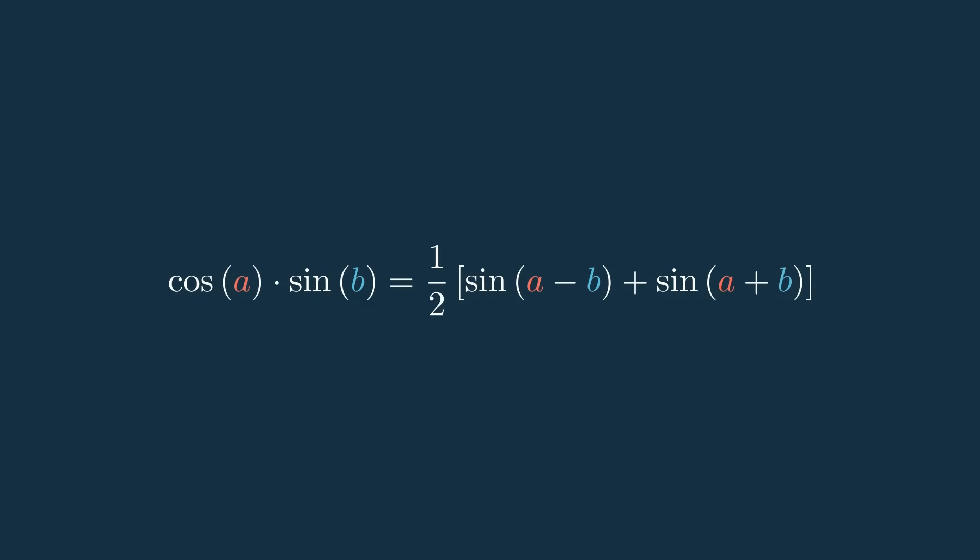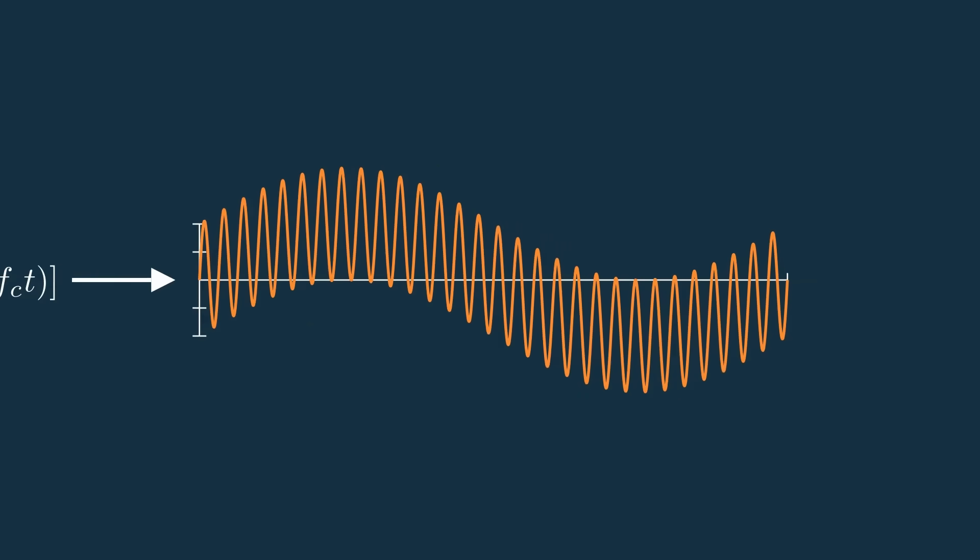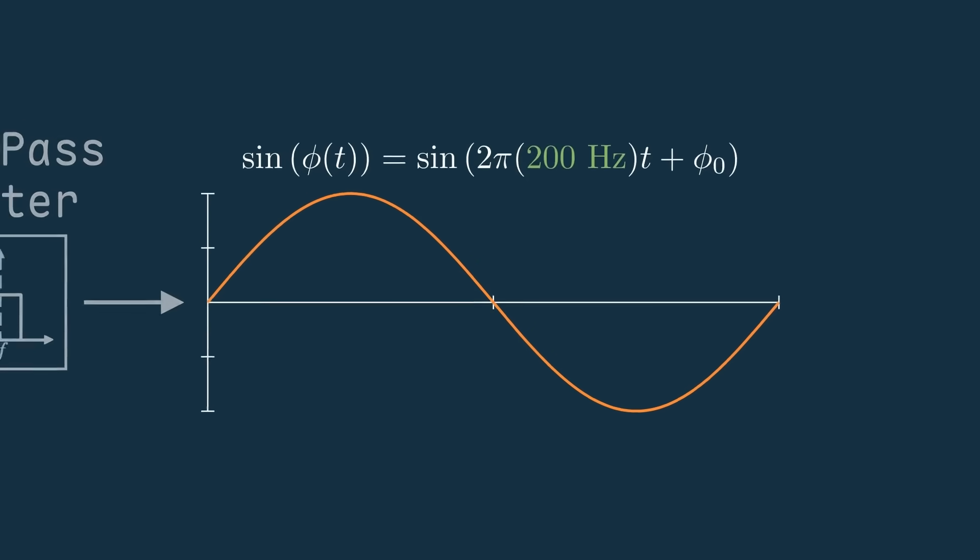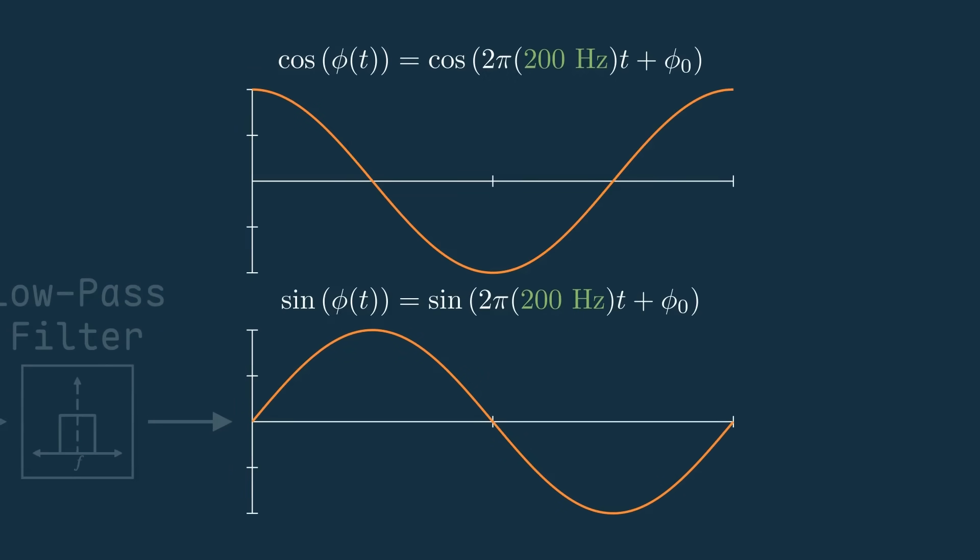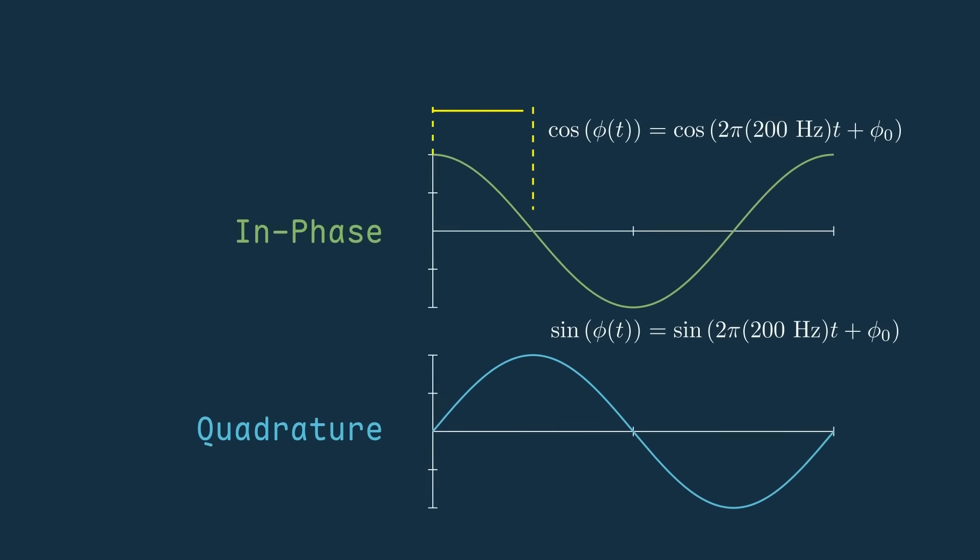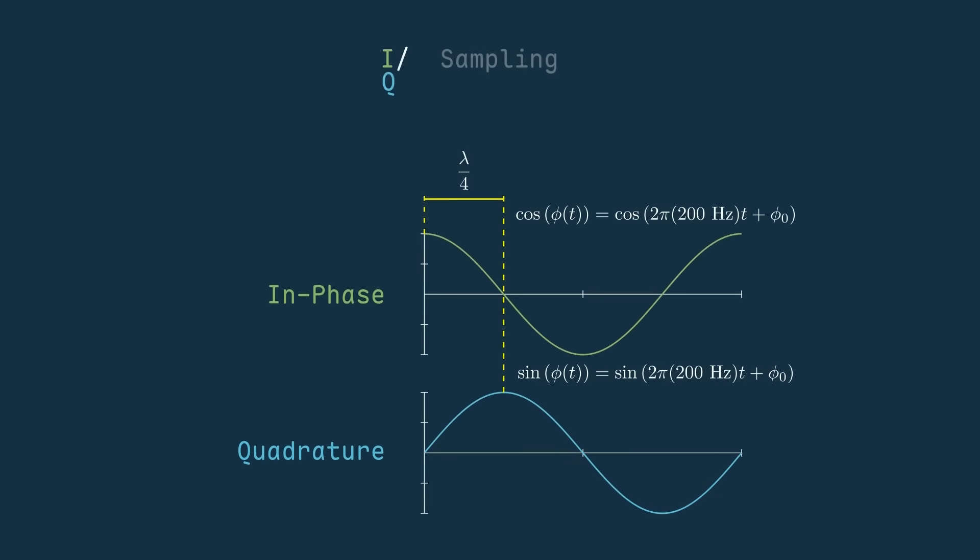Coming back to the other signal we got, the sine one, we can do this exact same thing to isolate the phase term here too. So after applying the low pass filter on both of these equations, we have a cosine and a sine function dependent only on the phase. These two signals are called the in-phase and quadrature signals, because the quadrature component is a quarter wavelength out of phase with the in-phase component. And this is how we get the name IQ sampling or in-phase and quadrature sampling.